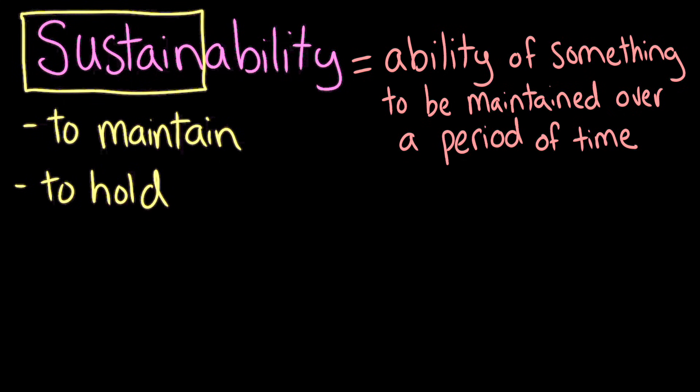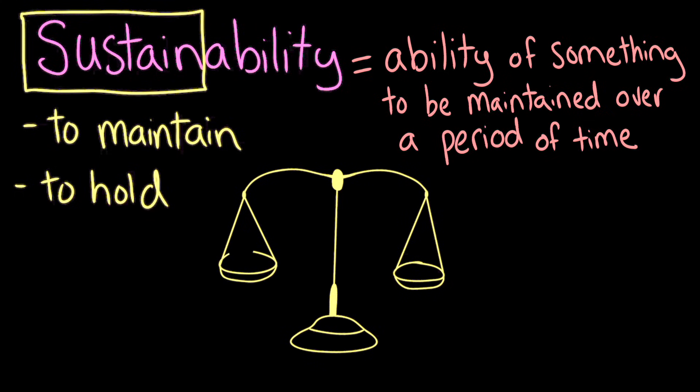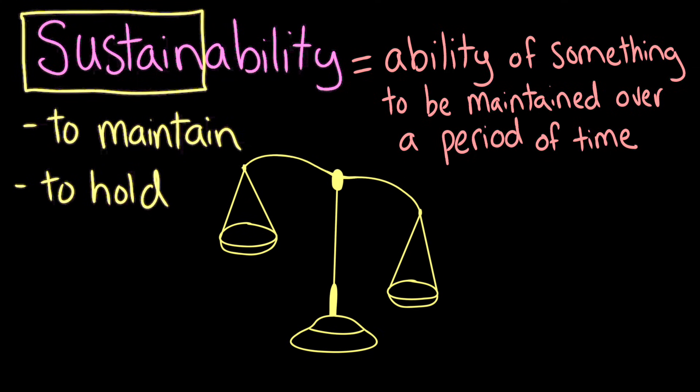It's like a delicate balance where each process doesn't take too much or produce too much so that all the other processes can keep on going. And theoretically, when all these processes are doing their jobs, this balance could last forever. But some things that humans do can disrupt this balance.